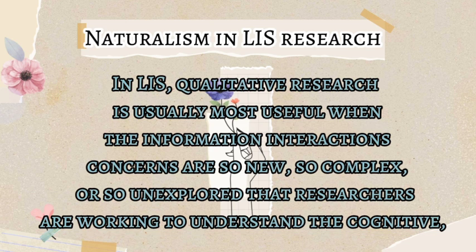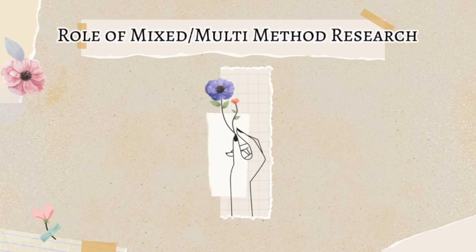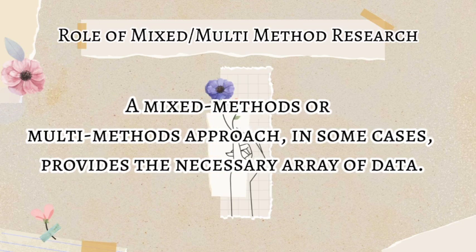In LIS research, qualitative research is usually most useful when the information interactions or concerns are so new, so complex, or so unexplored that researchers are working to understand the cognitive role involved. This is where mixed or multi-method research becomes relevant.